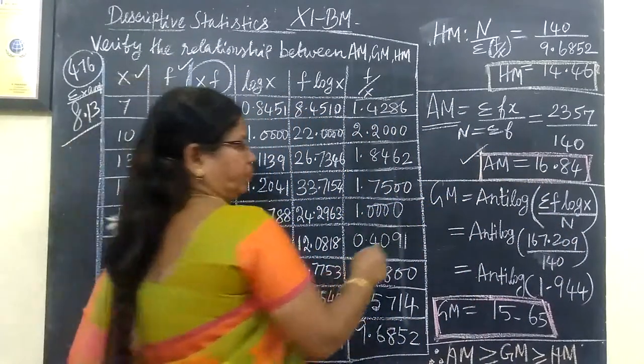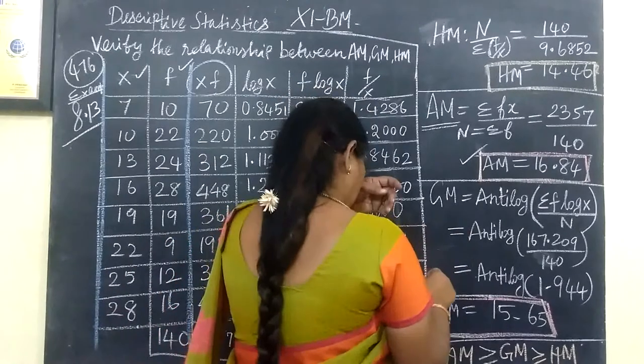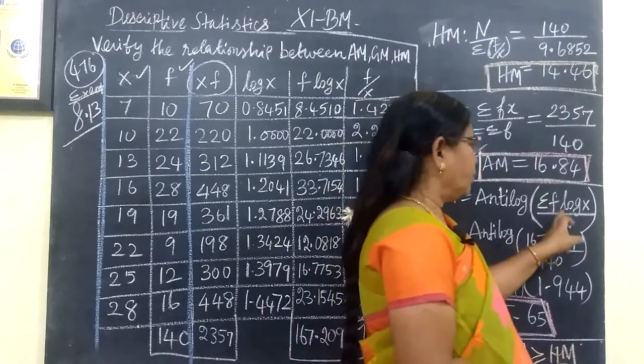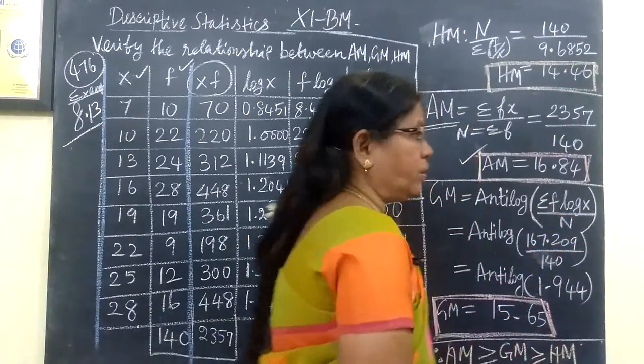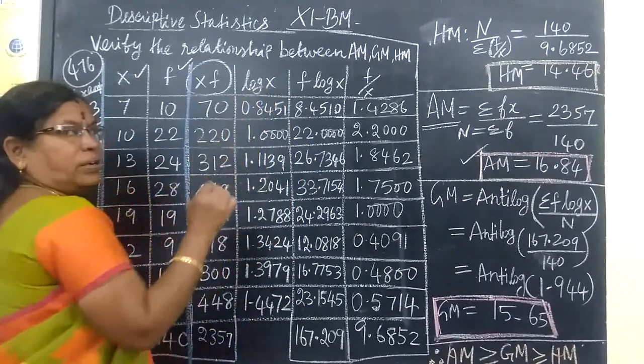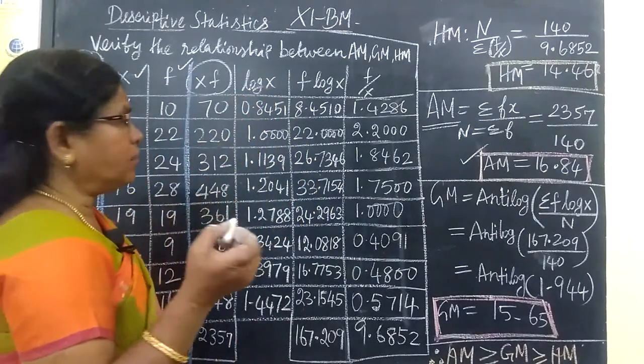Next one is geometric mean. This formula is antilog of sigma f log x divided by n, which is f into log x. So first of all, you find log x. We covered how to do this in yesterday's class and the video lesson.